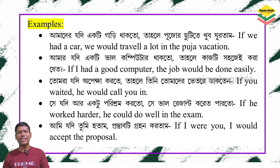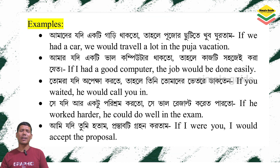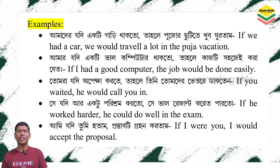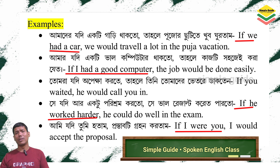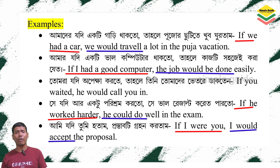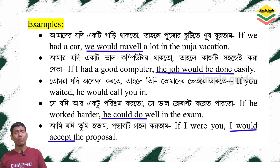Improbable conditions express impossible desires — all are set in the present imagined differently from reality. The if-clause is in simple past, and the main clause uses 'would' plus V1, or 'could' or 'might' plus the root form of the verb.